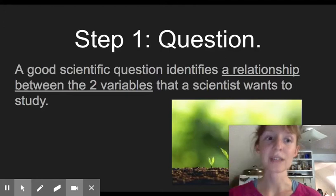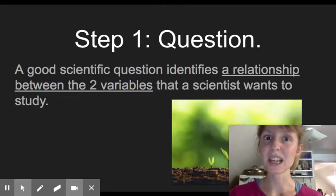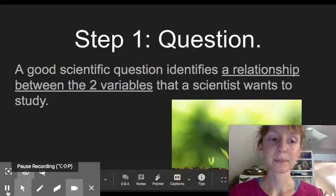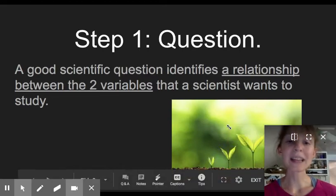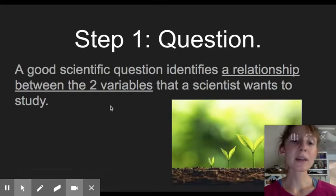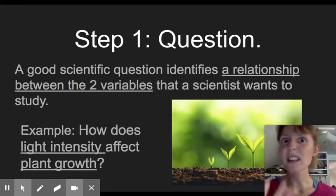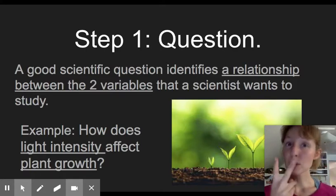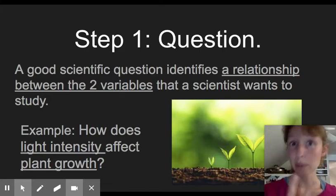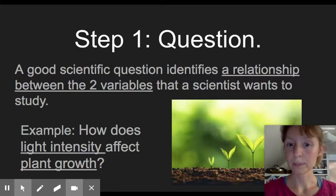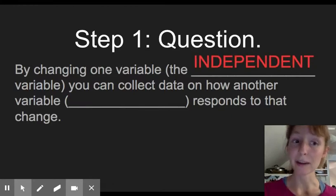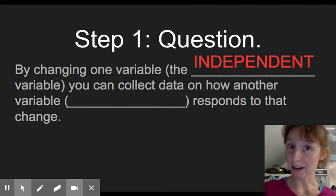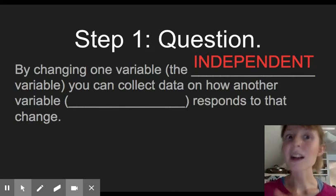The first step is a question. And a good scientific question identifies a relationship between two variables that a scientist wants to study. So what does that mean? Well, for example, a scientist might want to study what factors might help plants grow. So if they wanted to study how does light intensity, the amount of light a plant gets affect its growth, that would be two different variables, the light intensity and the plant growth, and the relationship between the two. By changing one variable, what we call the independent variable, you can collect data on how another variable, the dependent variable, the dependent variable responds to that change.